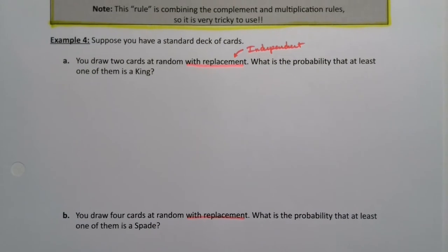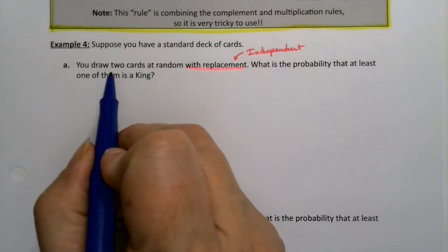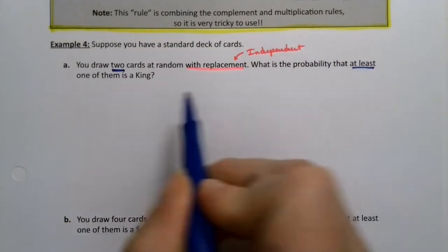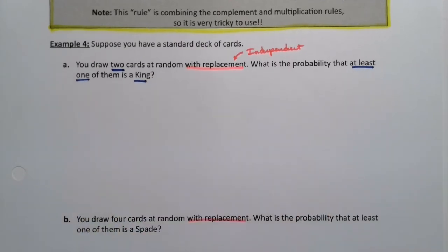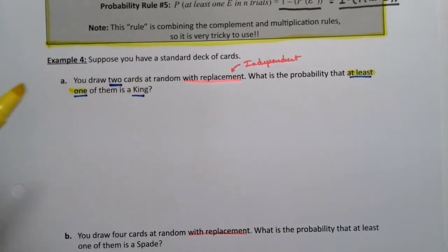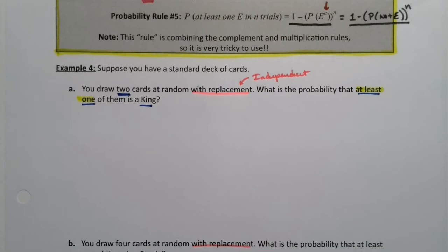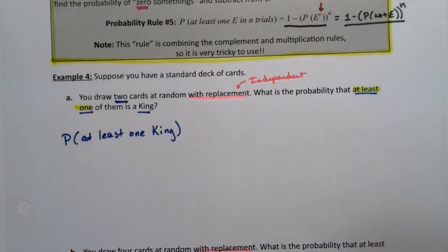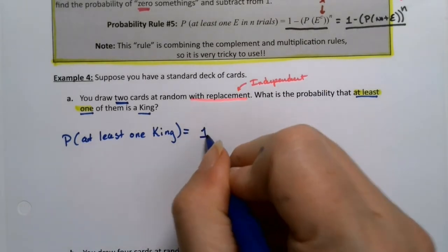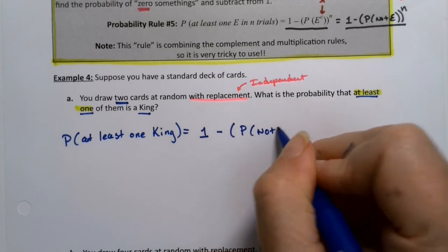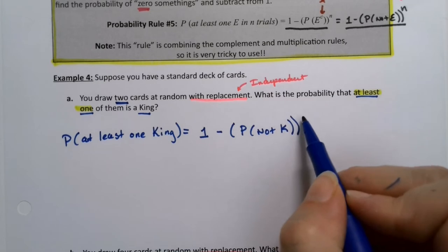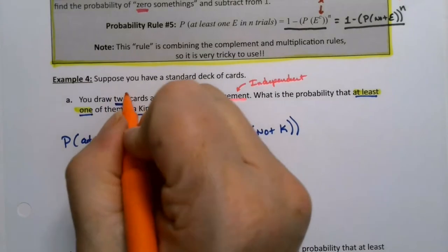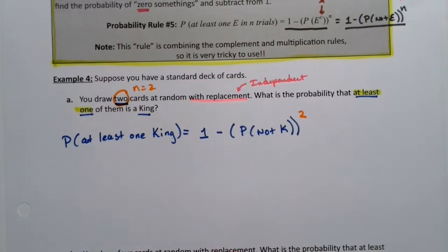We want to find the probability when we draw two cards at random that at least one of them is a king. The phrase 'at least one' should set off bells in your head — that means this particular rule, rule number five. So, the probability of at least one king equals one minus the probability of not getting a king, raised to the n power. Here n is two, since we're drawing two cards.